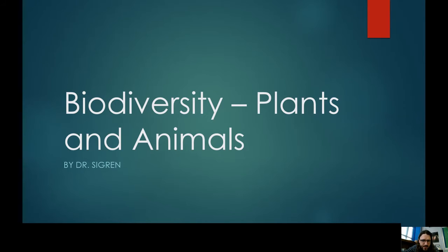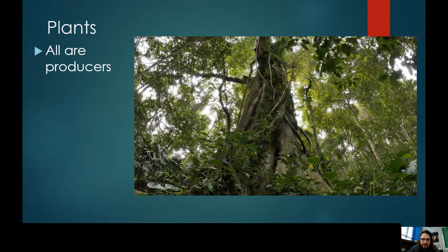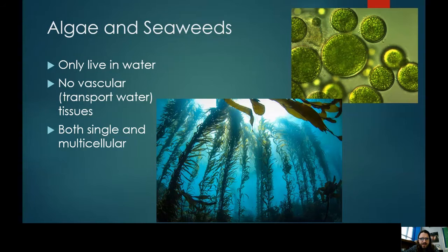As a reminder, plants in terms of food webs and ecology are pretty much all producers, which means they produce their own food out of sunlight — they're all doing photosynthesis. Our most basic and most primitive form of plant are algae and seaweeds.